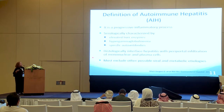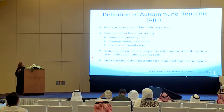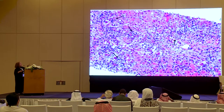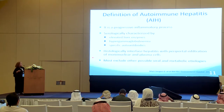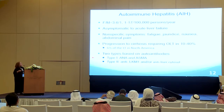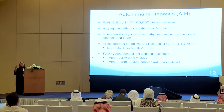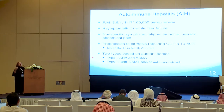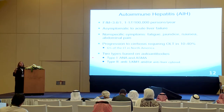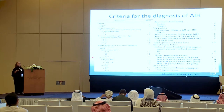For autoimmune hepatitis, it's a progressive inflammatory process serologically characterized by elevation of liver enzymes, hypergammaglobulinemia, and specific autoantibodies. Histologically, we see interface hepatitis with lymphoplasmacytic infiltrate. We must exclude other viral and metabolic etiologies. It's frequently asymptomatic — the patient has nothing, and elevated liver tests are found incidentally. Sometimes patients present with cirrhosis, sometimes with fulminant liver failure. Progression to cirrhosis occurs in 10 to 40% and represents 6% of all liver transplants in North America. There are two types, type 1 and type 2, based on the antibodies present.